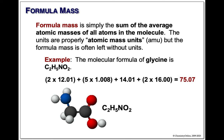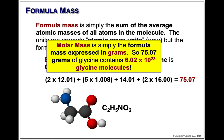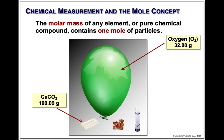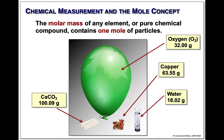Bottom line: if you have 75.07 grams of glycine, you have 6.02 times 10 to the 23rd molecules — kind of an amazing thing. Here is a balloon containing 32 grams of oxygen O2, a little lump of copper at 63.5 grams, 18 mL of water, and 100 grams of calcium carbonate. Each of these represents the same number of particles. Each of these is one mole. If you wanted to react copper with oxygen, you would know you need 32 grams of oxygen and 63.5 grams of copper. That's how you do quantitative stuff.